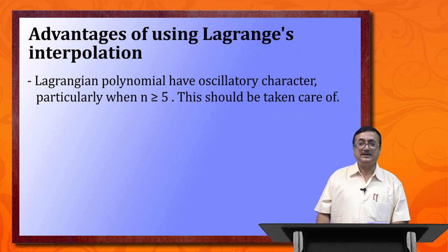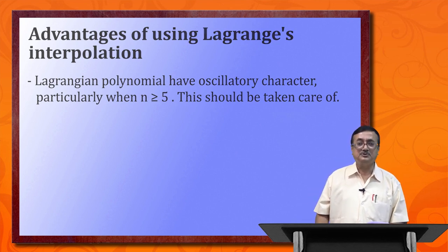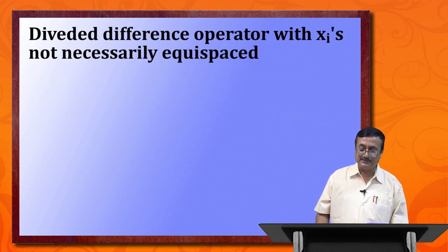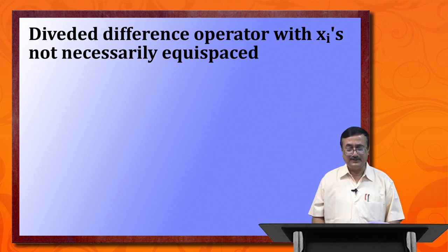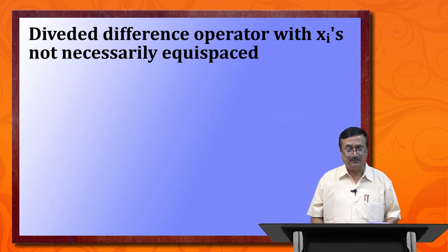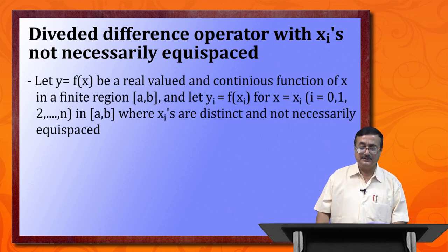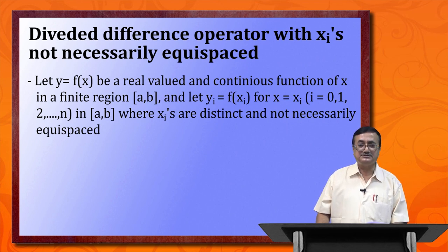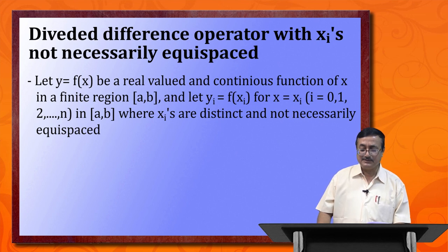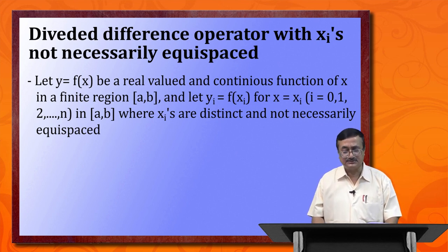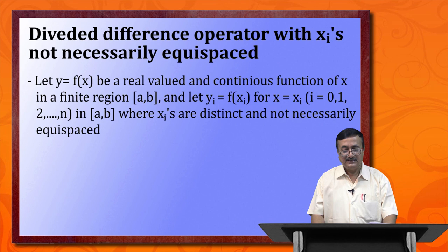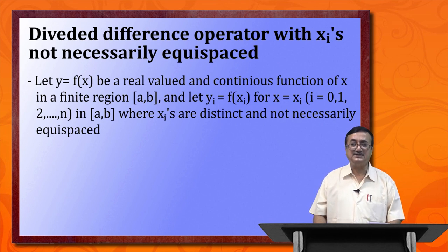We shall now go to another kind of interpolation polynomial known as Newton's divided difference polynomial. Before going into that, let us define the divided difference operator. Let y = f(x) be a real-valued continuous function of x in a finite region [a, b]. Let y_i = f(x_i) for x = x_i, i = 1 to n in the closed interval [a, b], where x_i's are distinct and not necessarily equispaced.